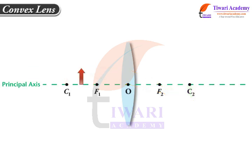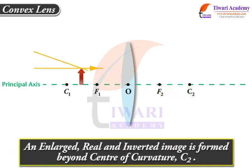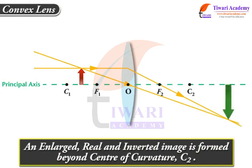An enlarged, real and inverted image is formed beyond centre of curvature C2 when an object is placed between centre of curvature C1 and principal focus F1 of a convex lens.